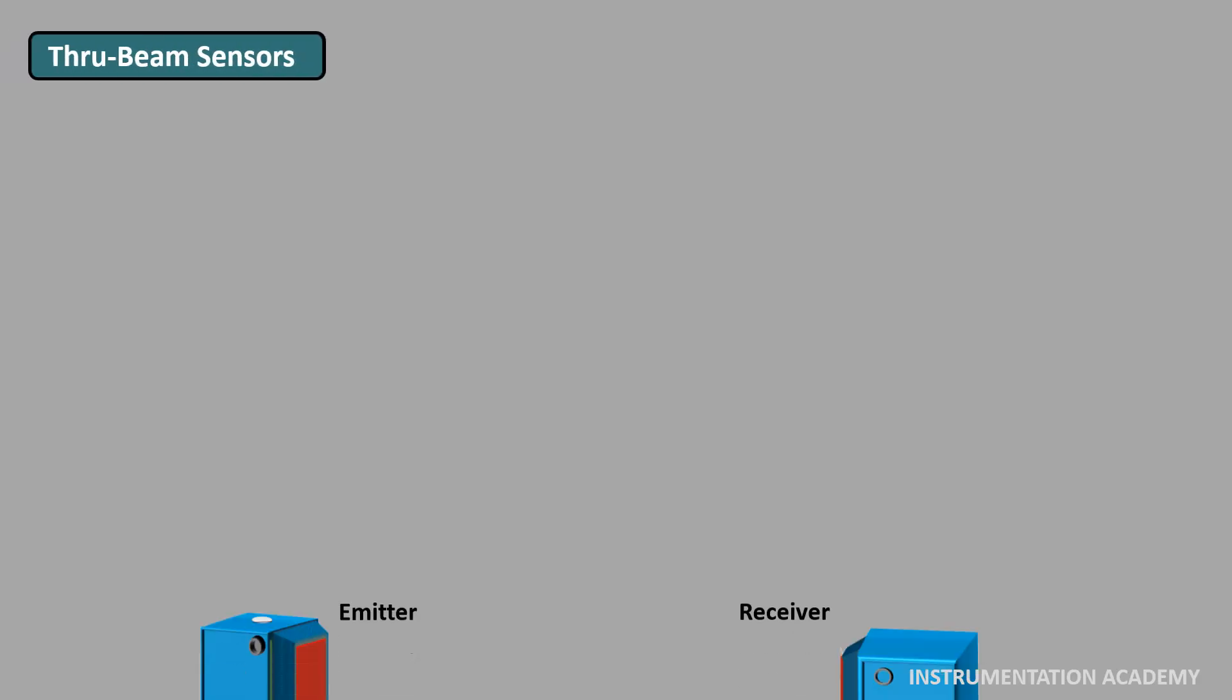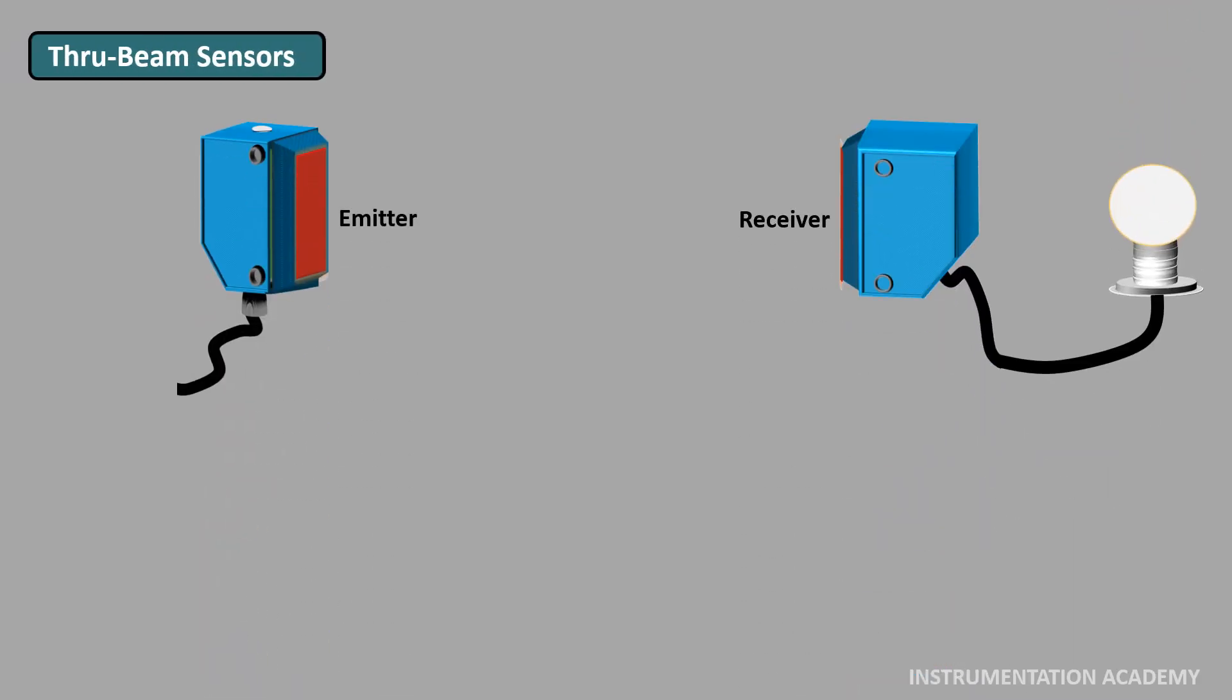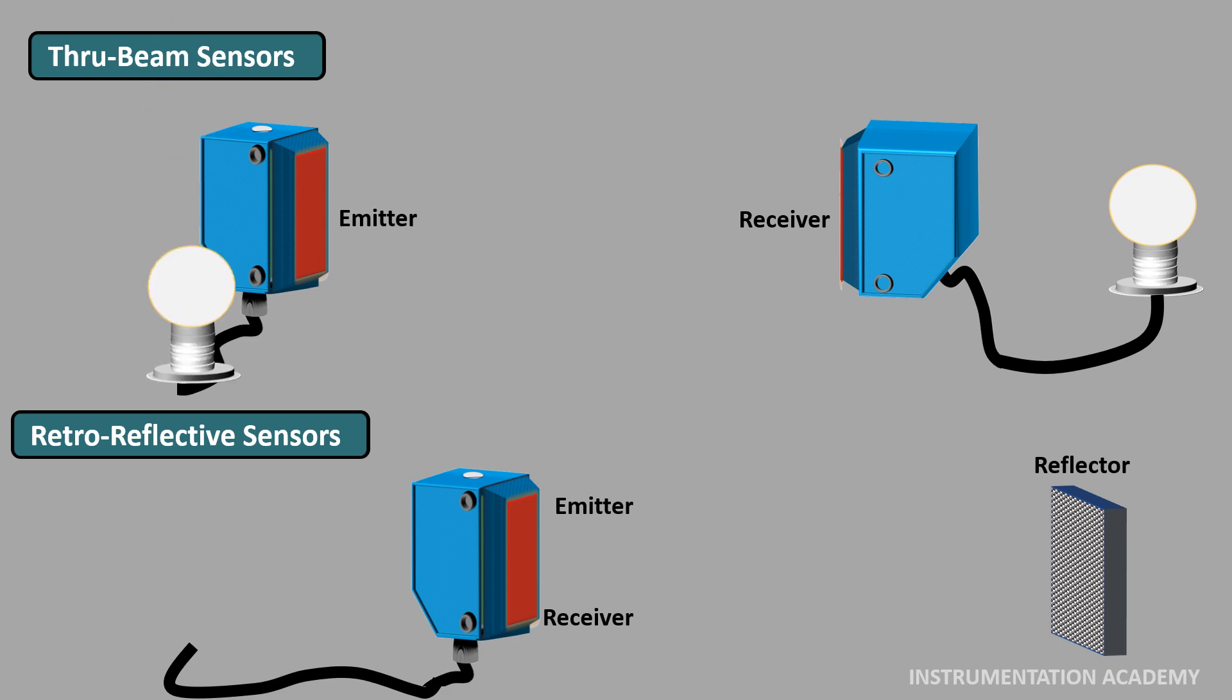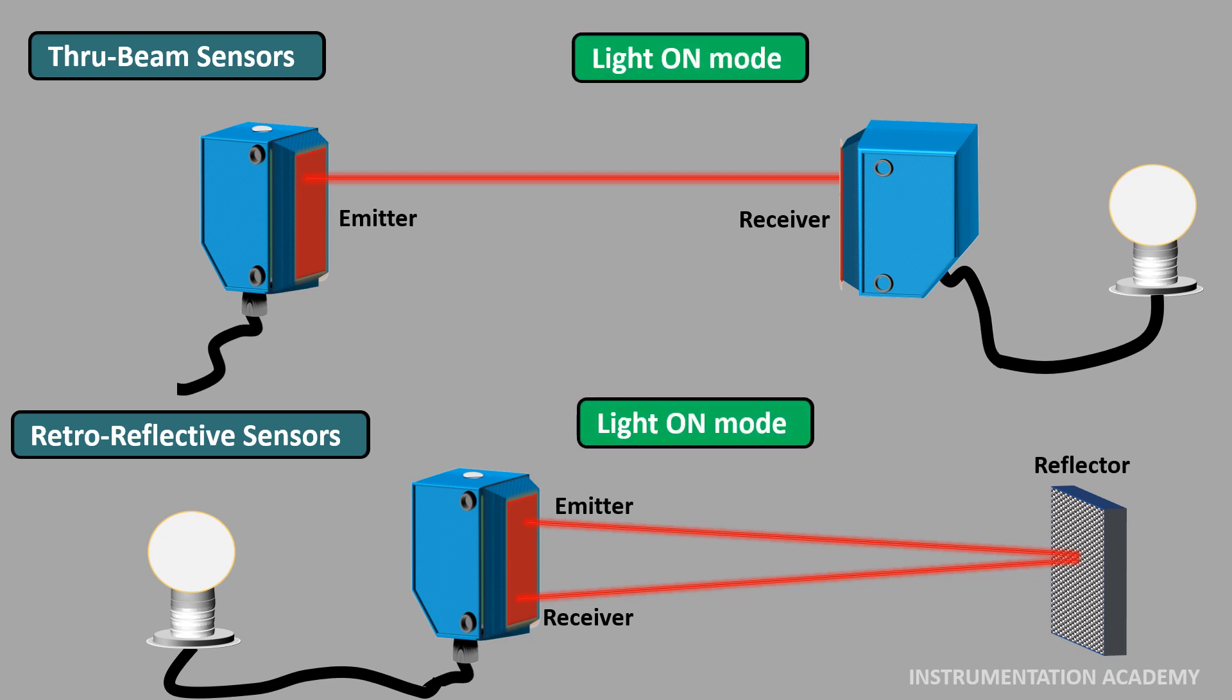Consider that a through beam sensor is connected to a bulb and a retro reflective sensor is connected to another bulb. In both these cases, the receiver receives light normally from the emitter even before the object interrupts the beam of light. In light on mode, as the output is energized when the receiver receives light from the emitter, the bulb glows. While in dark on mode, as the output is not energized when the receiver receives light from the emitter, the bulb will be switched off.